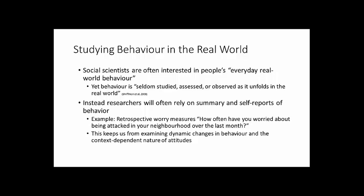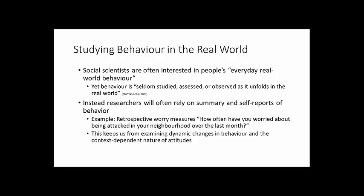The problem with retrospective questions is that they don't allow us to understand how fear of crime varies across time and particular situations — for example, whether fear is heightened at night or in an unfamiliar environment. There are also pitfalls with retrospective recall when asking people to count back on episodes of fear, producing errors and biased estimates. To overcome these challenges, researchers have proposed Ecological Momentary Assessments (EMAs) and Experience Sampling Methods (ESMs), which allow participants to report repeatedly on their experiences in real time, in real-world settings, over time, and across different contexts.